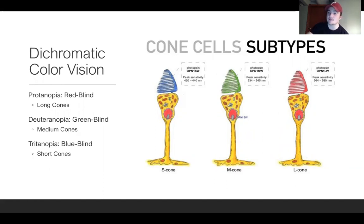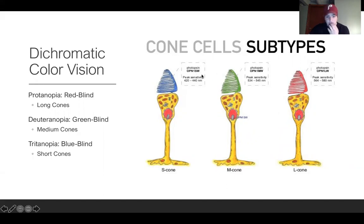People who are dichromatic or have dichromatic color blindness only have two of these cones working. This is due to a mutation in the OPN genes. As you can see here, the OPN1SW gene is actually the gene encoded for the blue or the short cones and the other cones as well.